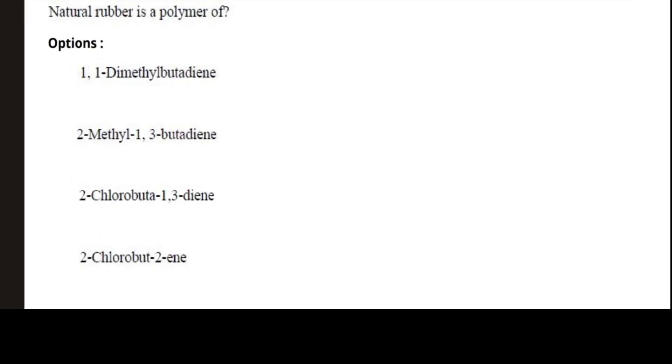Next question: natural rubber is a polymer of. First option: one dimethyl butadiene, two methyl three butadiene, two chlorobuta-1,3-diene, two chlorobut-2-ene. And the answer is two methyl-1,3-butadiene.